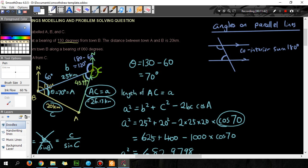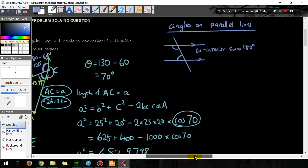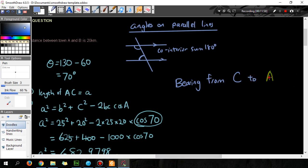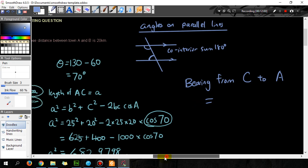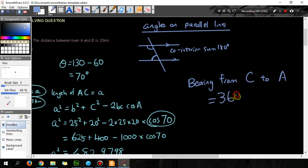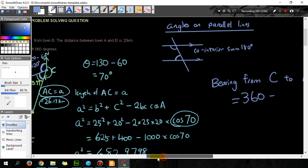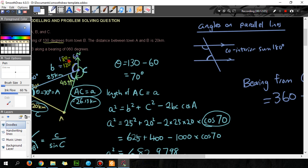So angle C, the bearing from C to A is therefore 360 minus 120 and minus 45.99 and that will give us this.